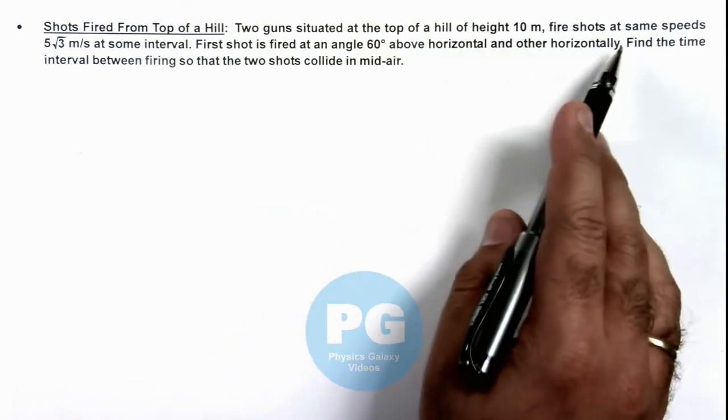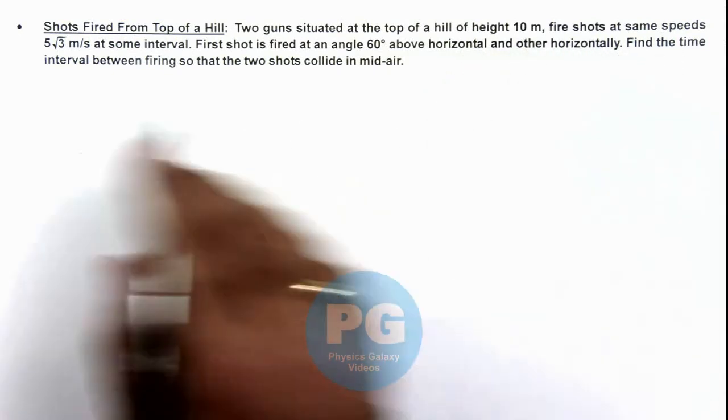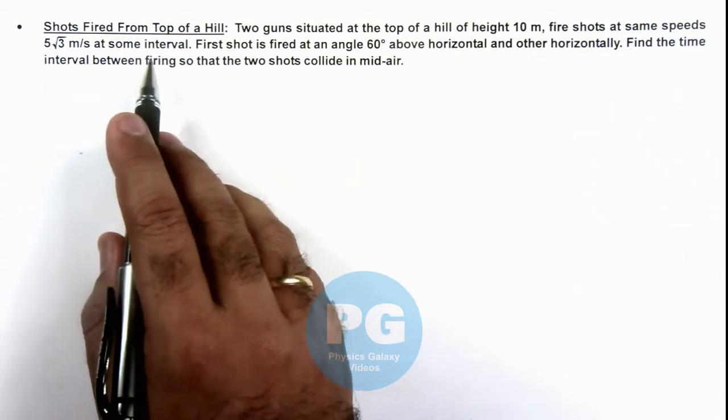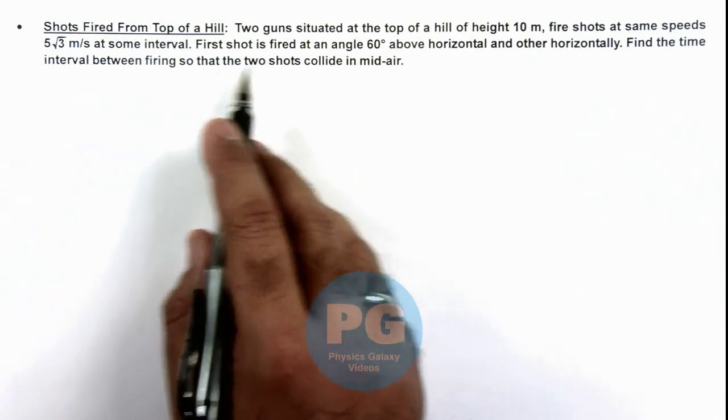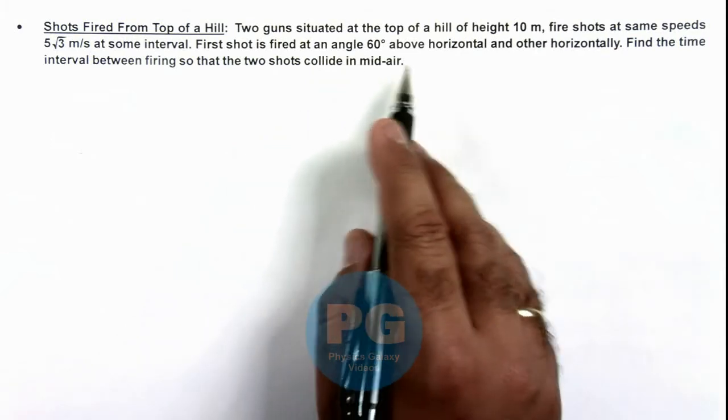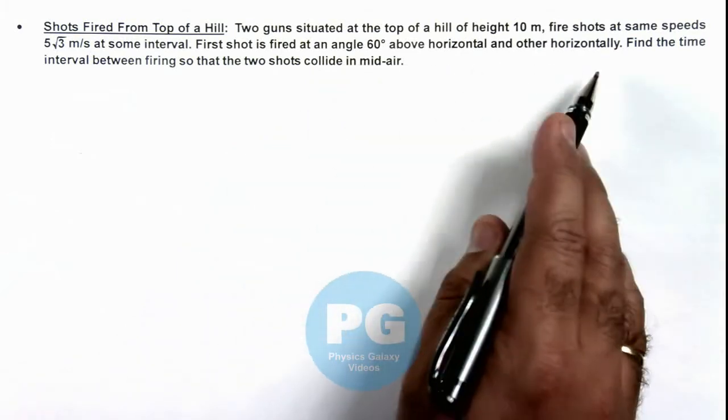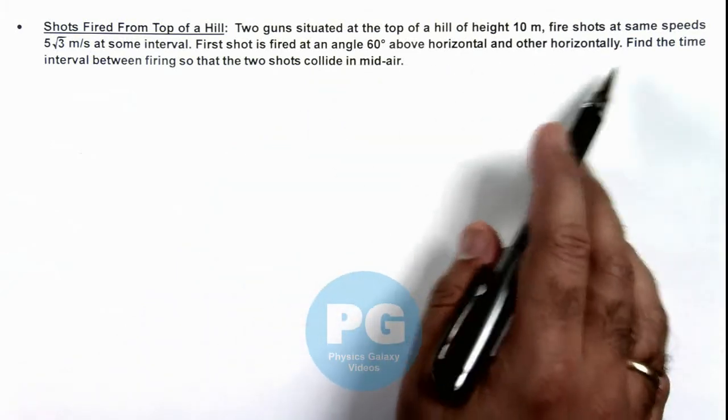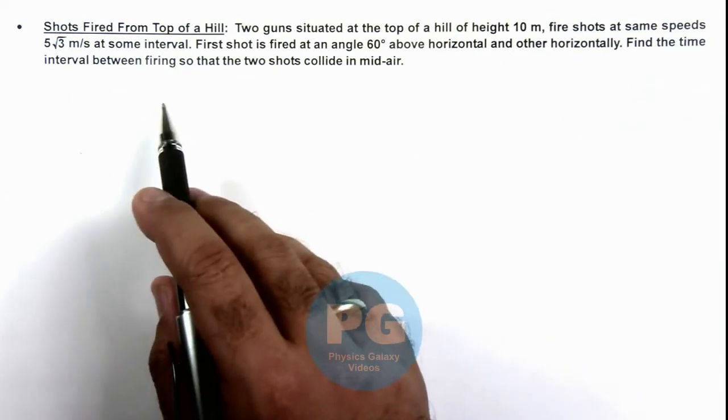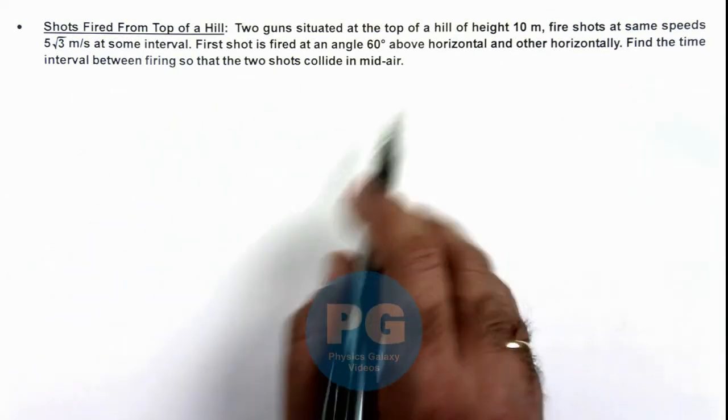Fire shots at same speed, 5 root 3 meters per second at some interval. First shot is fired at an angle 60 degree above horizontal and the other one is horizontally. We are required to find the time interval between firing so that the 2 shots collide in mid air.